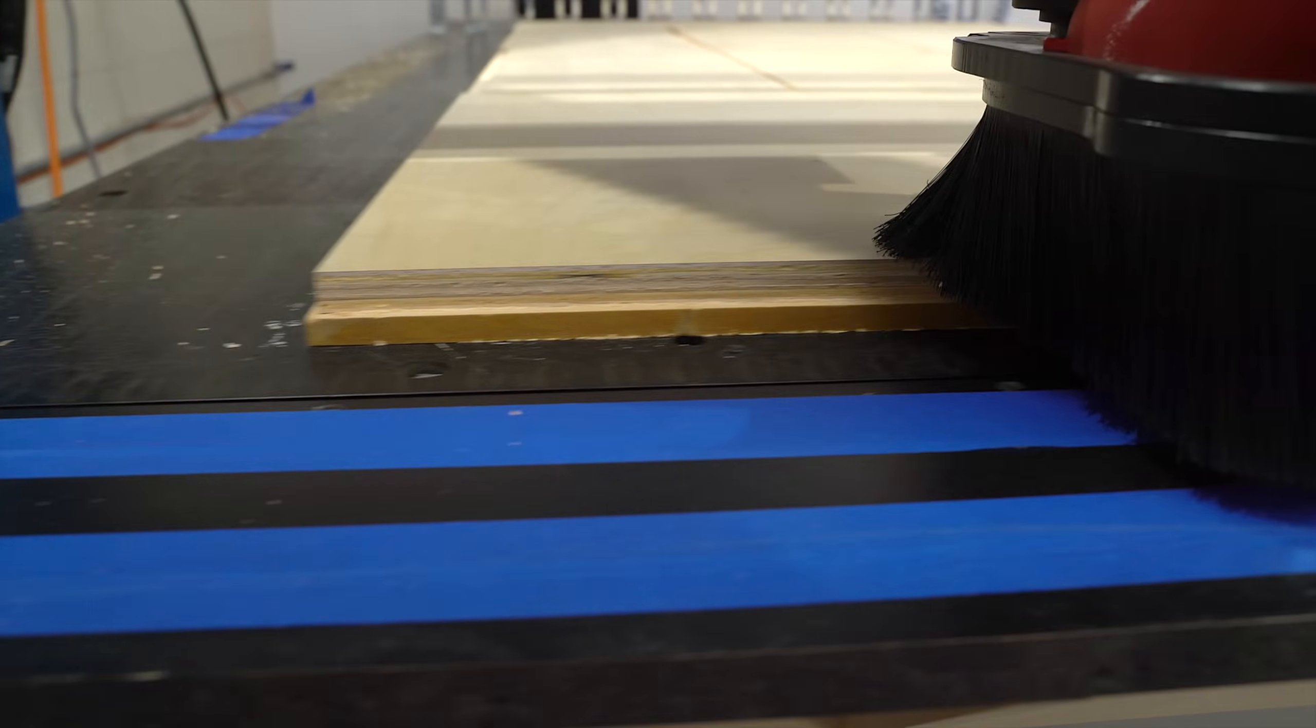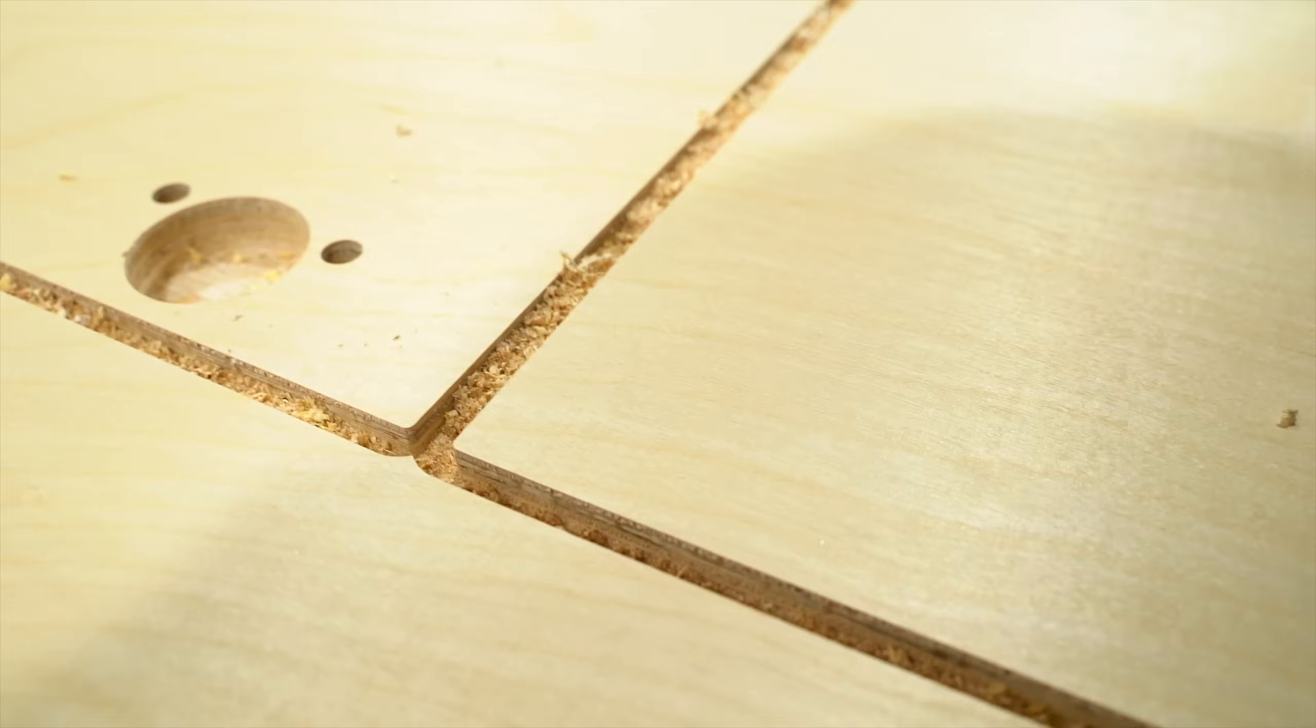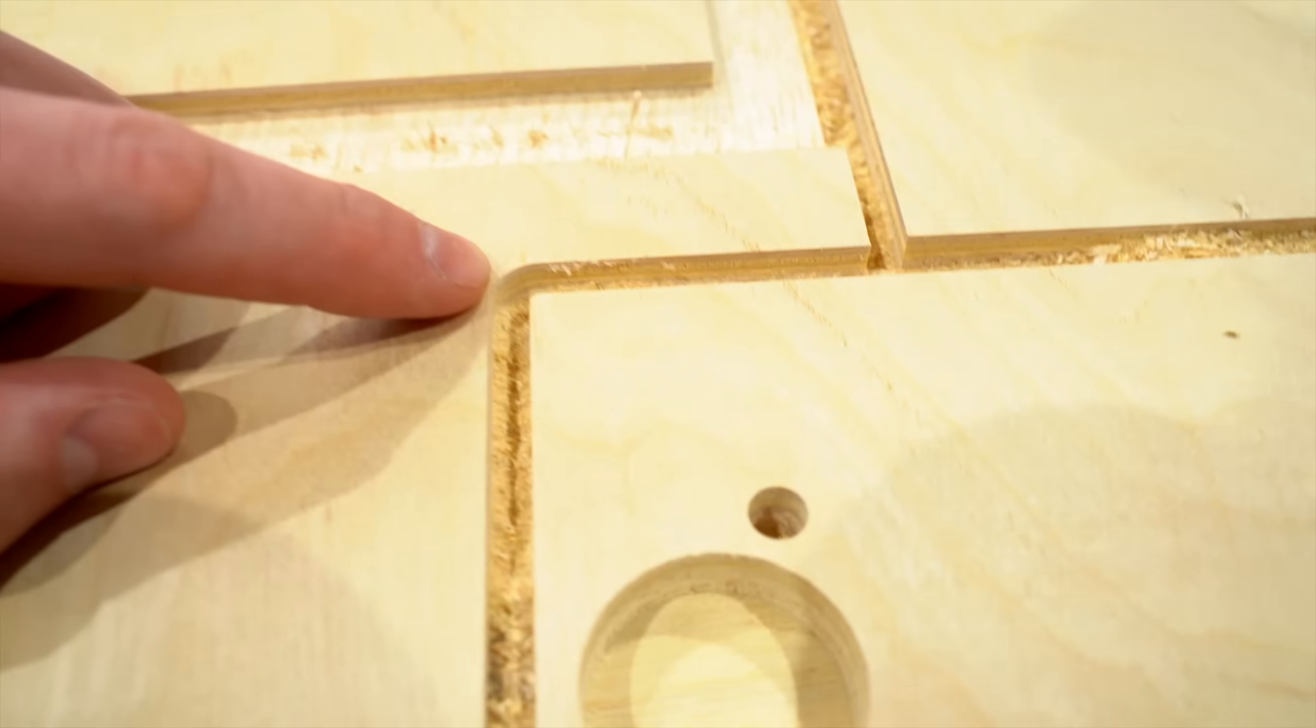This is a full depth pass in three quarter plywood and it's 430 inches a minute at about 18,000 RPMs. And of course, a conventional cut. See here, real nice sharp inside edges and the outside edge. There's an outside edge.